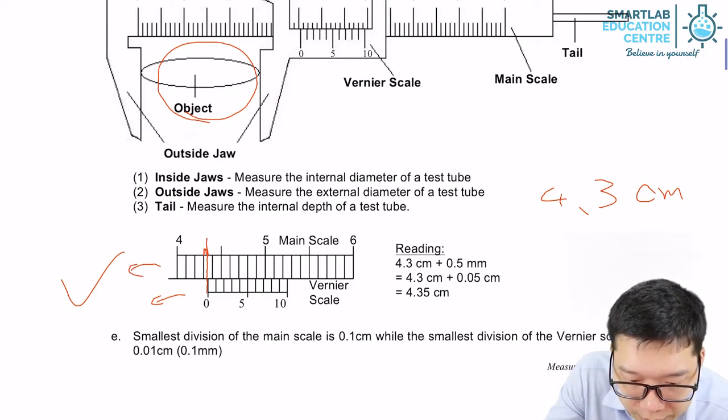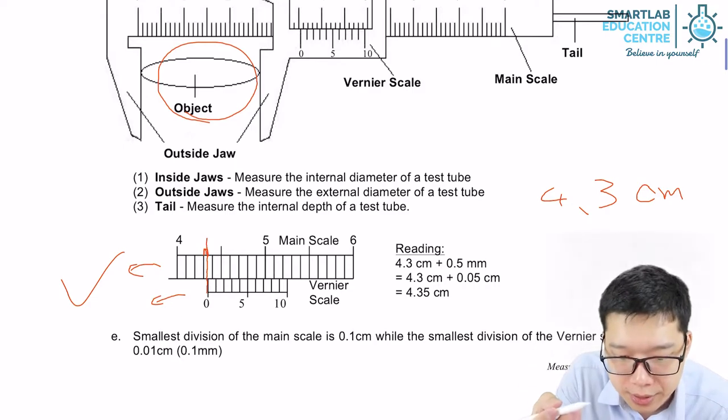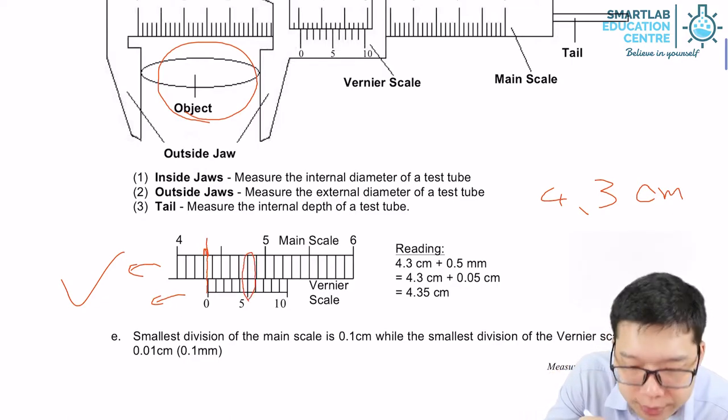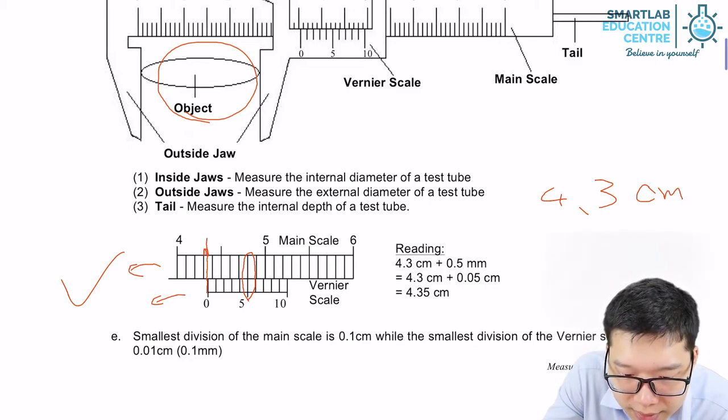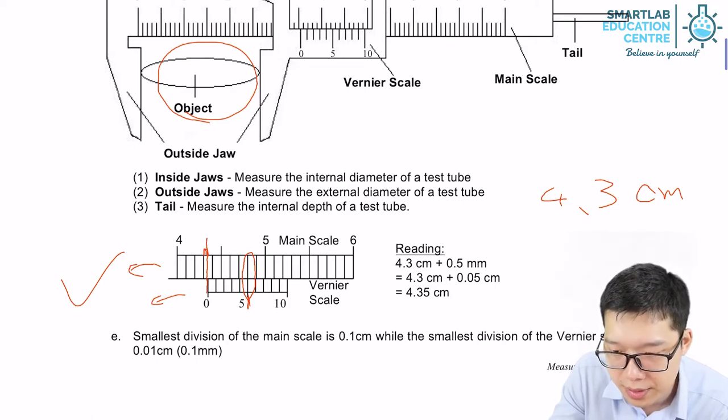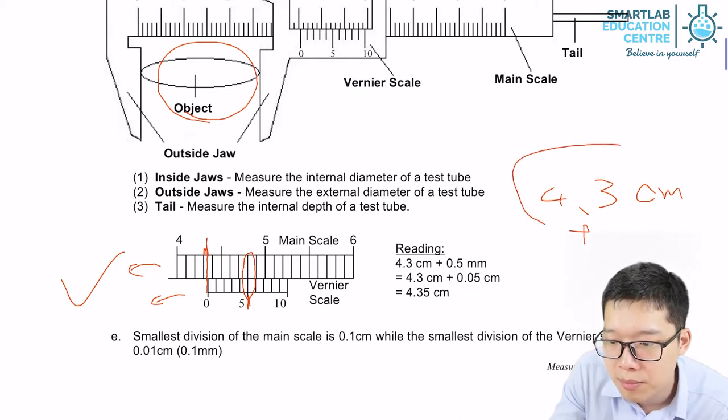We need to identify, out of the 11 lines including the first one, which line is actually aligning the main scale and the vernier scale. Can you see that other than the fifth line, all the other lines are not aligned? Only the fifth line is aligned.